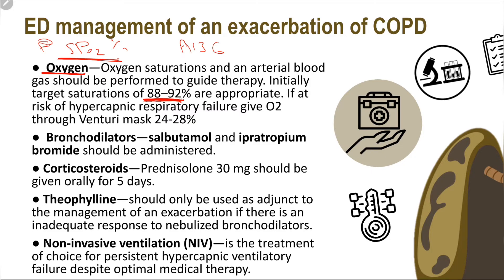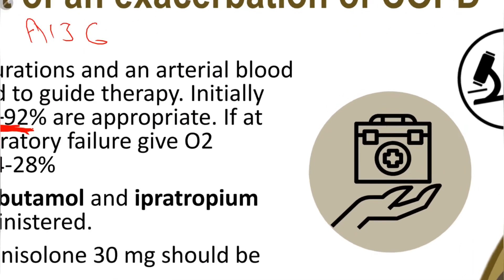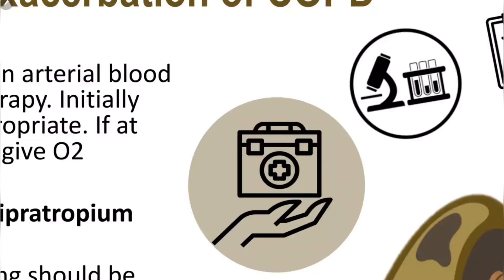The reason to target 88–92% is that many patients with COPD are habituated to a low oxygen level. If you go higher — for example to 99% — their respiratory drive will decrease, leading to bradypnea or apnea and CO2 retention. In the emergency department, the simple face mask commonly used provides about 40 to 60% oxygen. If this face mask has a reservoir bag, it will provide almost 100% oxygenation to the patient.